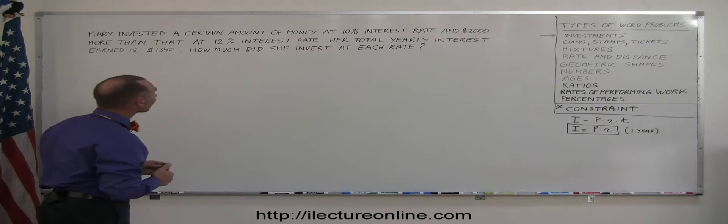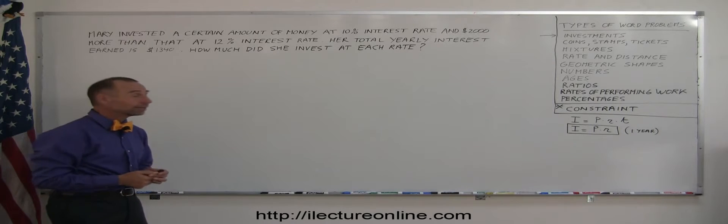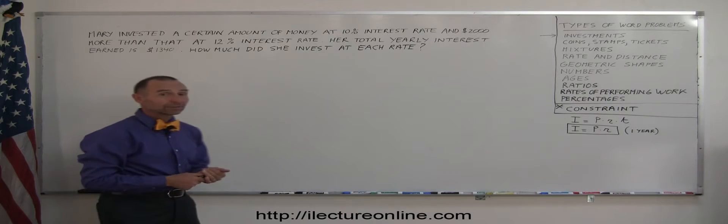Mary invested a certain amount of money at 10% interest rate and $2,000 more than that at 12% interest rate. Her total yearly interest earned is $1,340. How much did she invest at each rate?